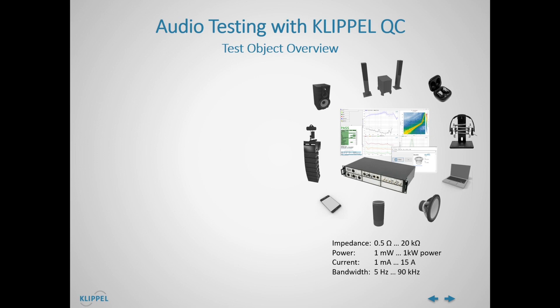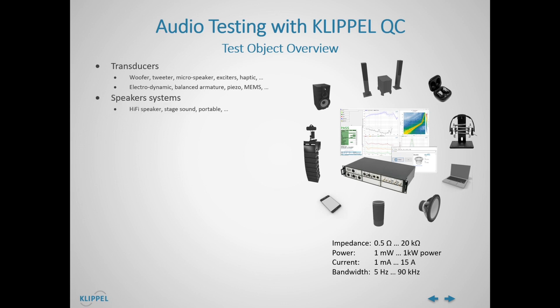Now that we have discussed the various fields of application, let us talk about the actual devices to be tested. First of all, we have the transducer as the most critical part of any audio system. The QC covers all kinds of sizes and transduction principles and also includes shakers and tactile devices. The next category are speaker systems in the wider sense, covering all devices that include one or more transducers mounted in sealed or vented enclosures, providing a dedicated signal input. There is no strict limits towards integrated audio systems, but this category covers all devices that are capable of playing back or capturing audio signals, but only as a functional subset.